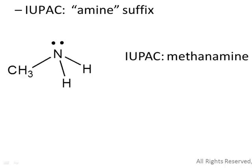Primary amines are often written in condensed form. The NH2 group represents the amine, so methanamine appears as CH3NH2. If the R group had two carbons, we'd have ethanamine; three carbons would be propanamine, and so on.